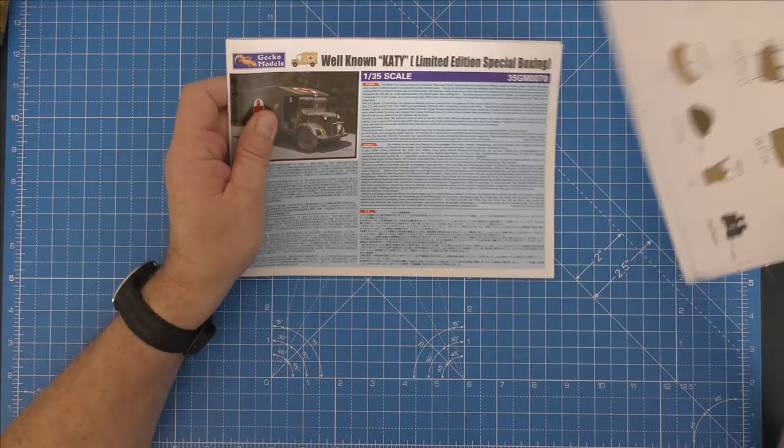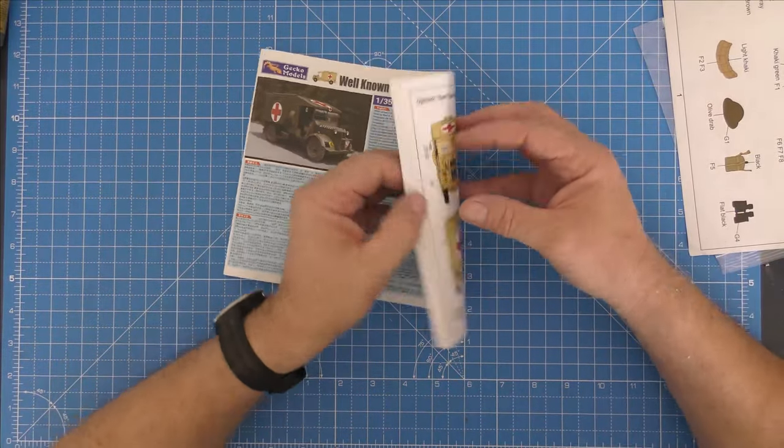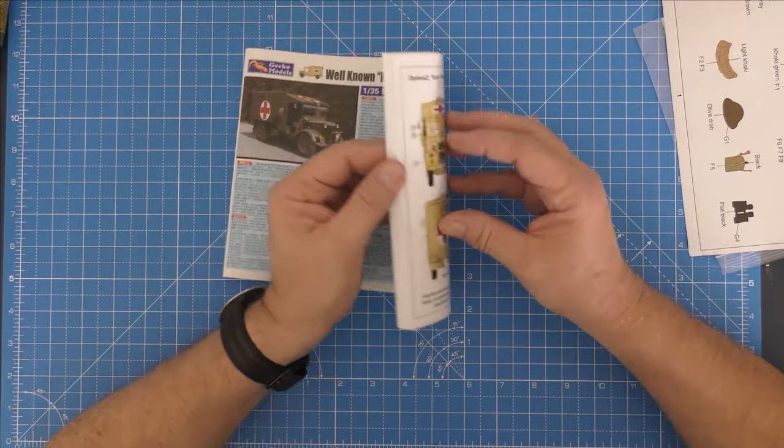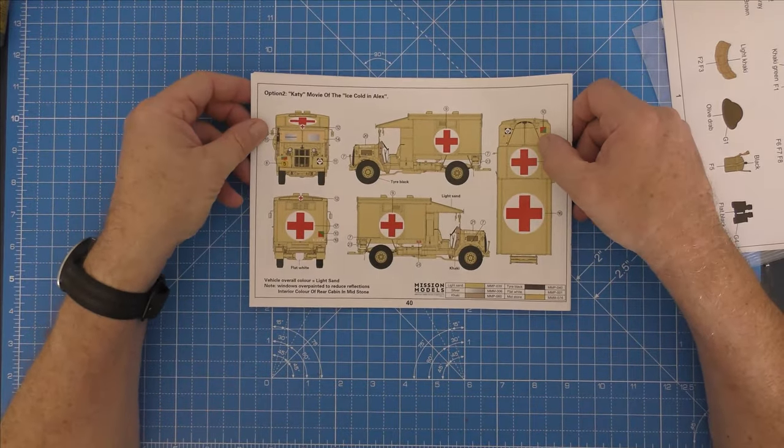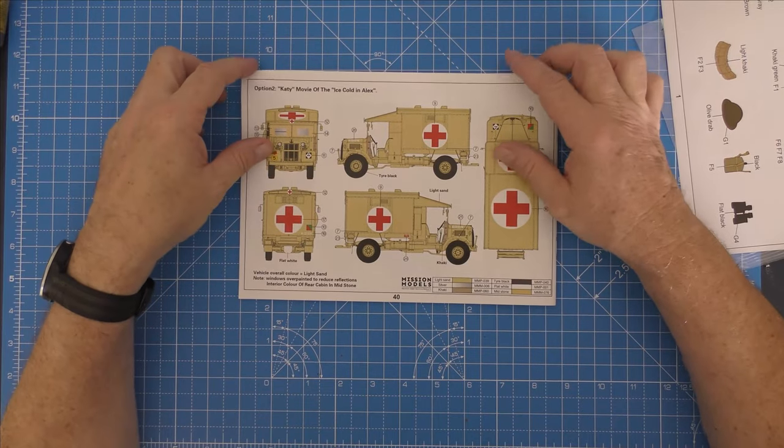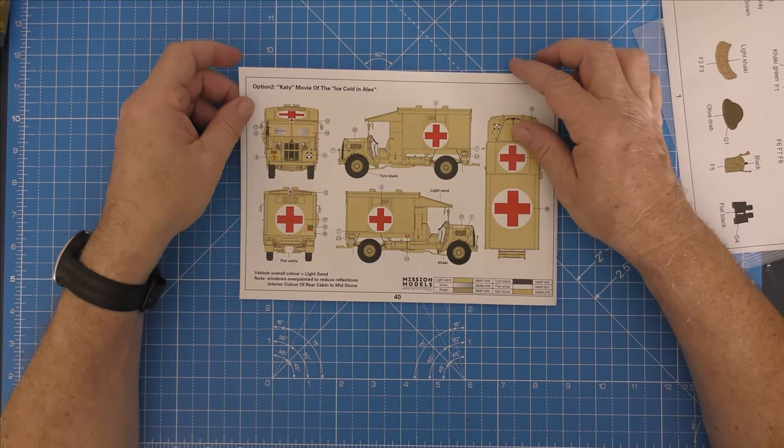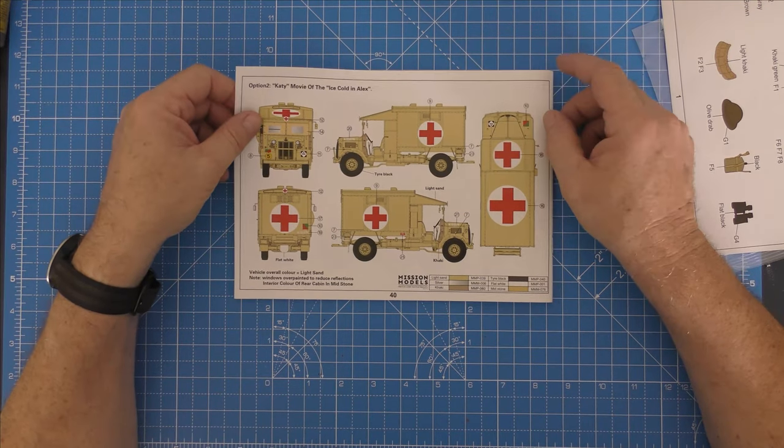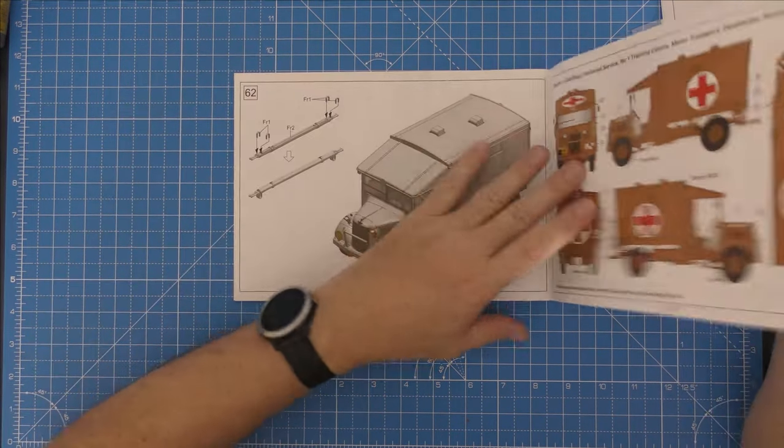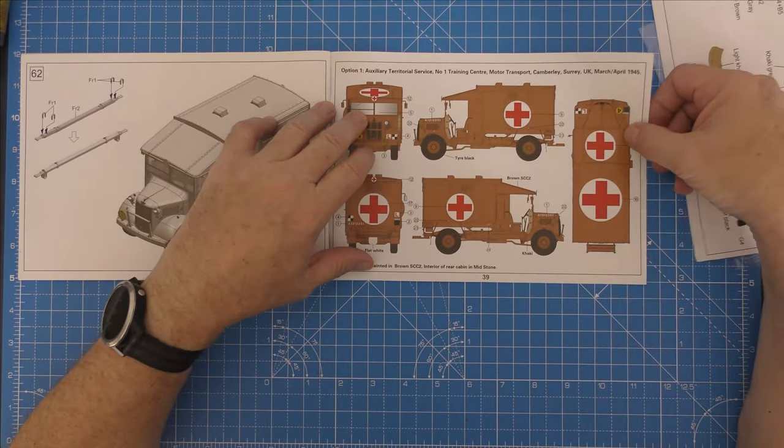We will start with the instruction booklet, and I do mean a booklet. Quick view of the two versions - that's Katie from the movie Ice Cold in Alex.